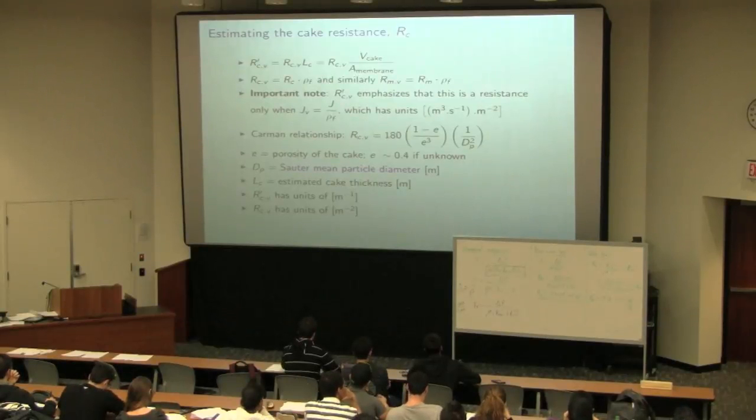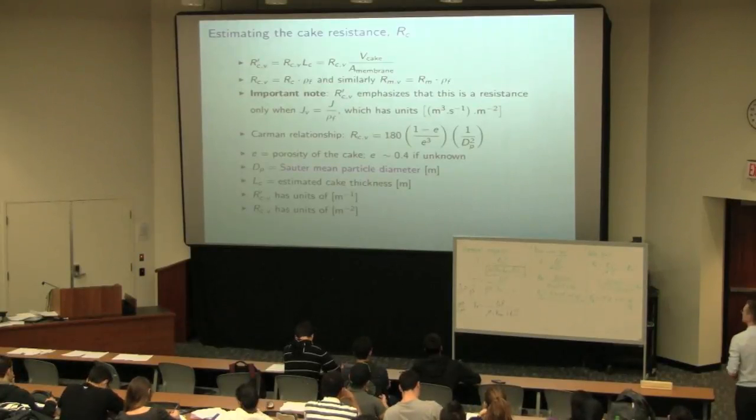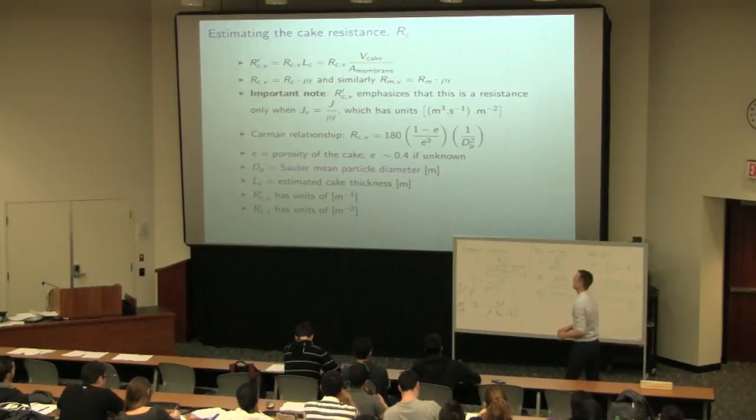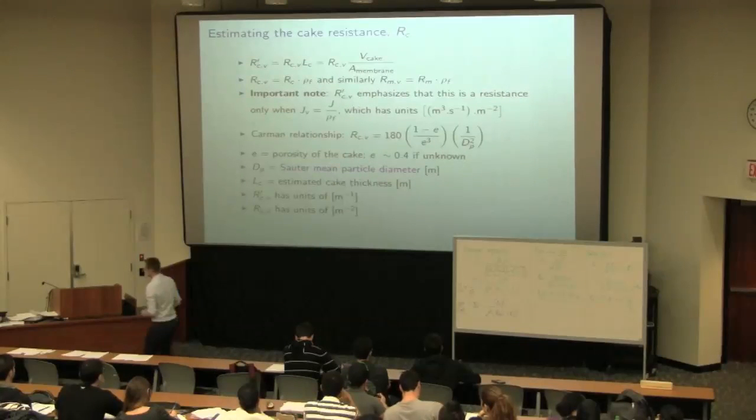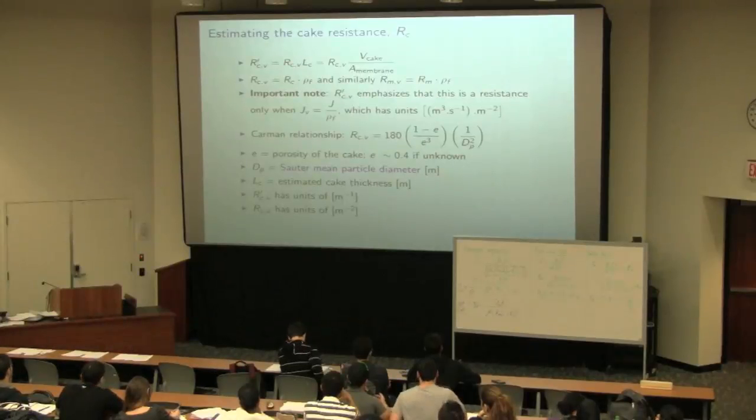rather just scrape all the cake off, measure the volume of that cake over the entire membrane divided by the surface area that it solidified on, and then that gets you the average thickness throughout the membrane. So that first equation up there is quite practical to use on an experimental setup.